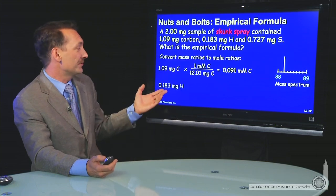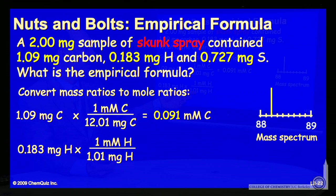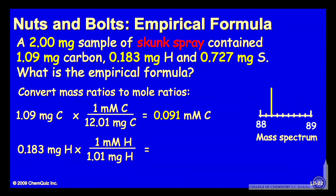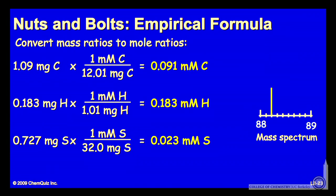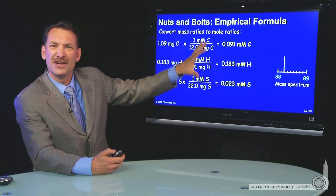We can do the same thing with hydrogen, converting milligrams of hydrogen to millimoles of hydrogen using the relative molar mass of hydrogen. And we can continue and do that with sulfur. So all three compounds from milligrams to millimoles. Now we know the mole ratios. They just aren't very neat.